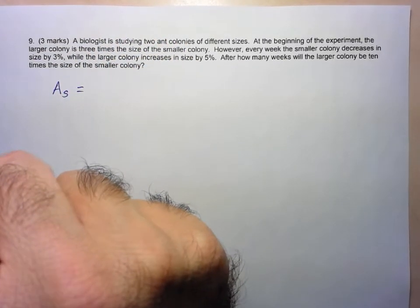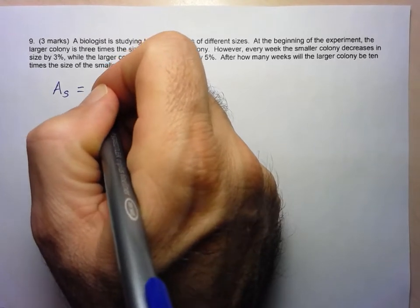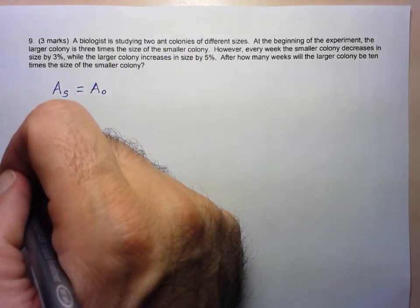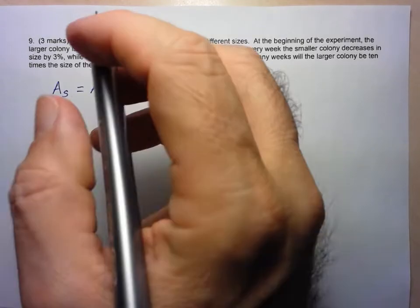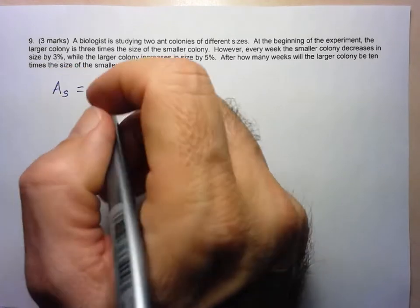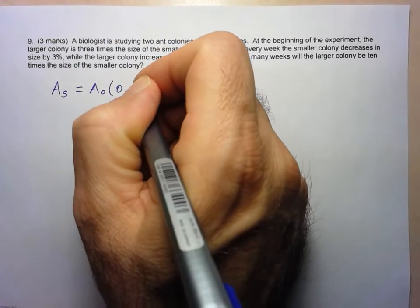So if I call AS the amount of ants in the smaller population, we know that that's going to be given by the initial population which I'll call A0. We don't know what that is yet, or maybe we don't even need to know it. And since it's decreasing by 3% every week, we know that if we lose 3%, we're going to be left with 97%.